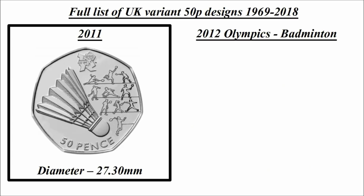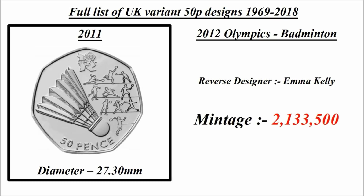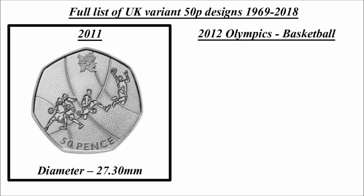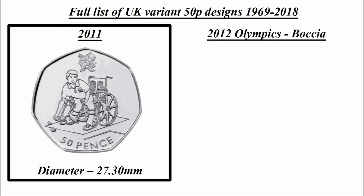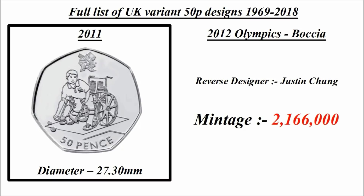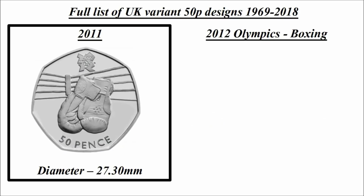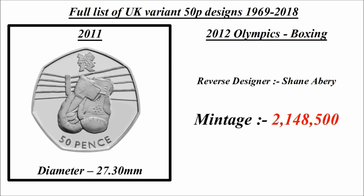Olympics badminton: reverse designer Emma Kelly, mintage 2,133,500. Olympics basketball: reverse designer Sarah Payne, mintage 1,748,000. Olympics boccia: reverse designer Justin Chung, mintage 2,166,000. Olympics boxing: reverse designer Shane Avery, mintage 2,148,500.